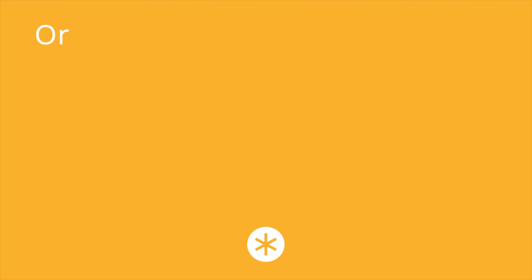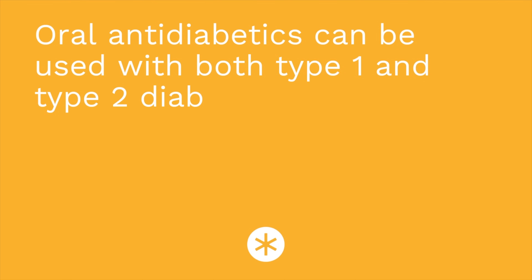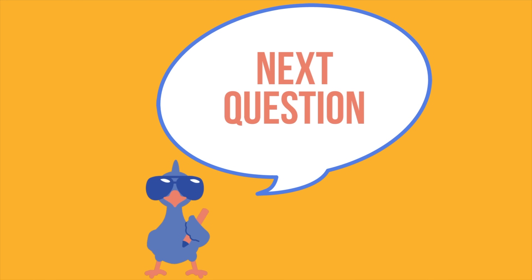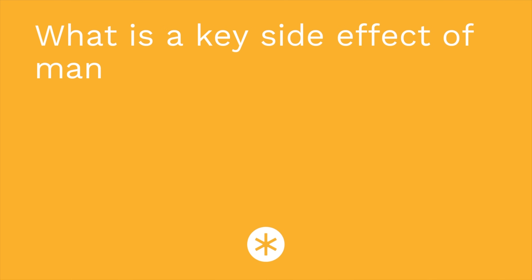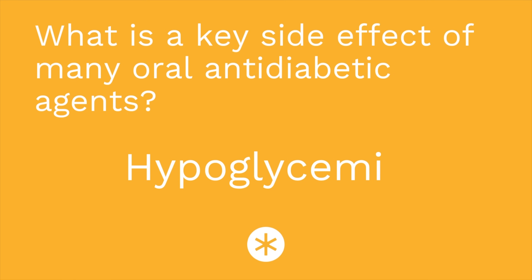Time for a quiz — I have three questions for you. First question: oral antidiabetics can be used with both type 1 and type 2 diabetes — true or false? The answer is false. Oral antidiabetic agents should only be used with patients with type 2 diabetes; patients with type 1 diabetes will require insulin. Second question: what is a key side effect of many oral antidiabetic agents? If you said hypoglycemia, you are correct.